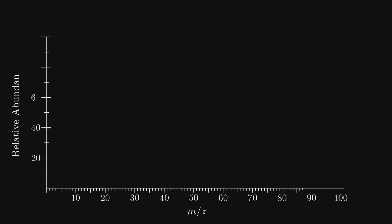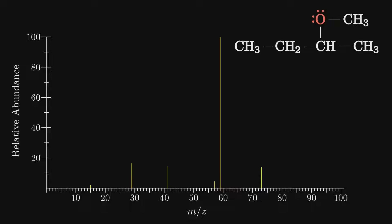The next functional group we will look at is the ethers, and we will see some similarities to the halides. The molecule that produced this spectrum, again with no obvious molecular ion peak, is 2-methoxybutane. First, ionization occurs on the oxygen because, like the halides, it has lone electrons. The bonds to the oxygen are now weakened, which means fragmentation should occur on either of them. Since oxygen is more electronegative, it takes the electrons and is not part of the fragment detected.